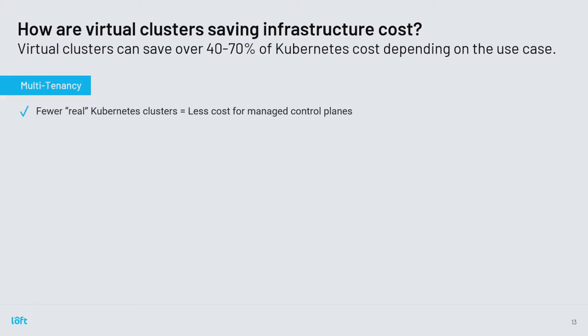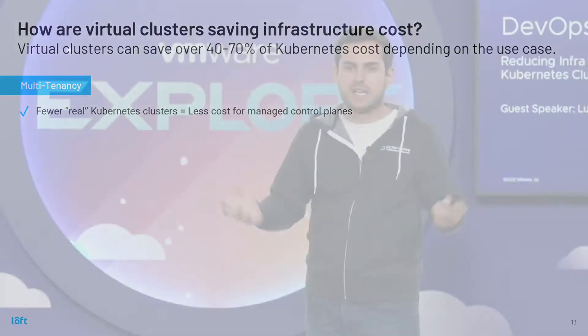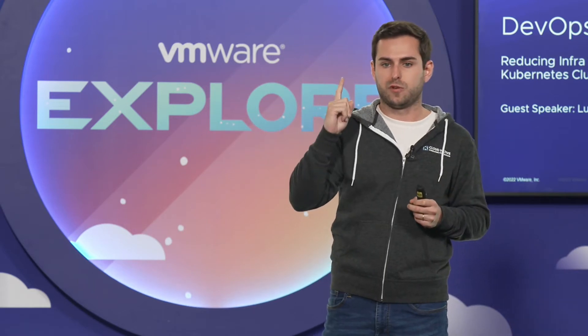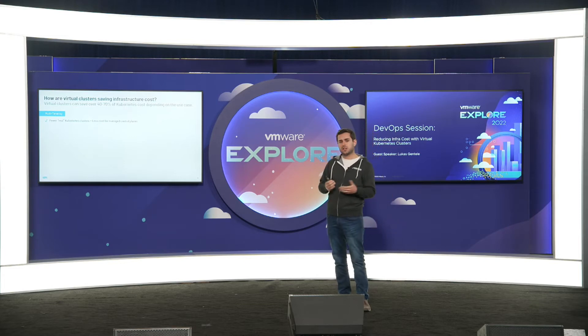So why is this a lot cheaper than creating real Kubernetes clusters? It's really a lot cheaper — 40% to 70%. There are several ways virtual clusters make running Kubernetes cheaper. The first is pretty obvious: we have fewer real Kubernetes clusters. We can have one EKS cluster but 100 virtual clusters on top of it, and we only get charged for one by AWS. You typically pay several hundred dollars per year per Kubernetes cluster. Virtual clusters run in a pod, so you only pay for the pod, which is typically a lot cheaper.